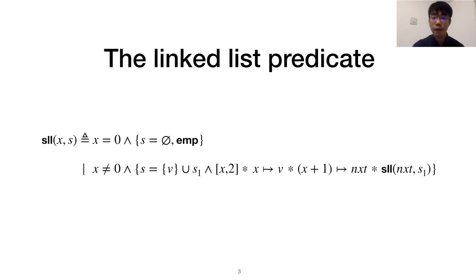The linked list predicate is defined with two constructors: an empty case when x is a null pointer, and a non-empty case when x points to the value at the head of the list and x plus one points to the tail.